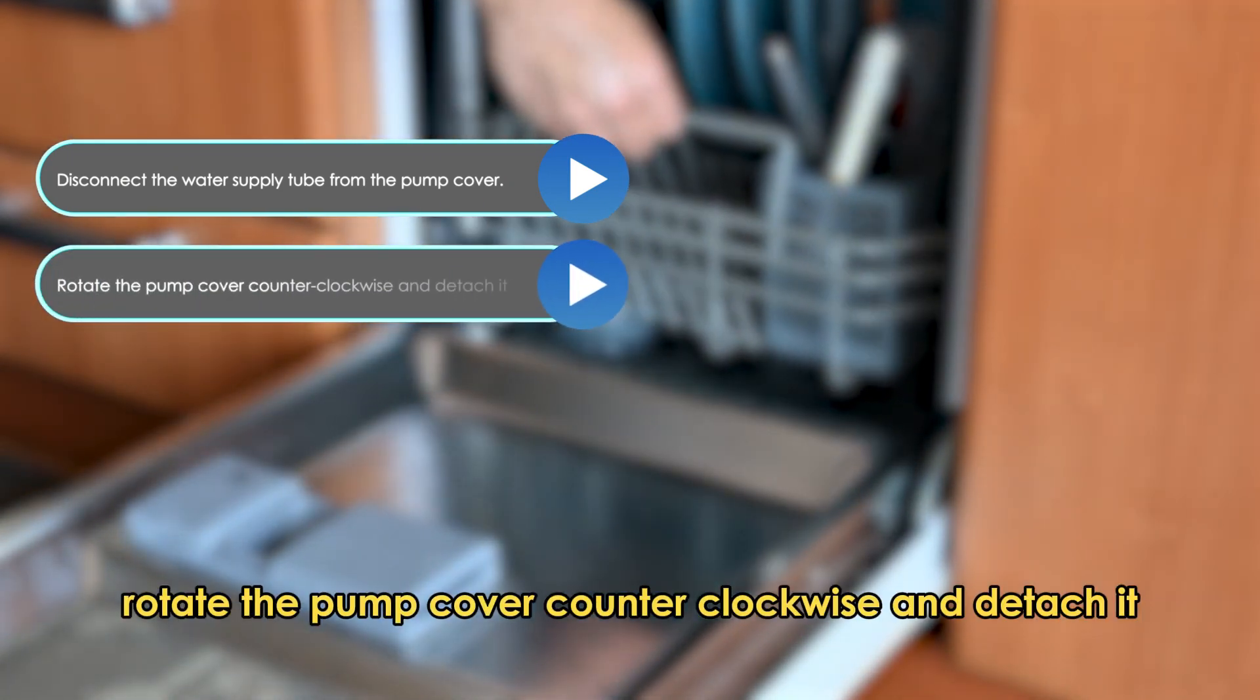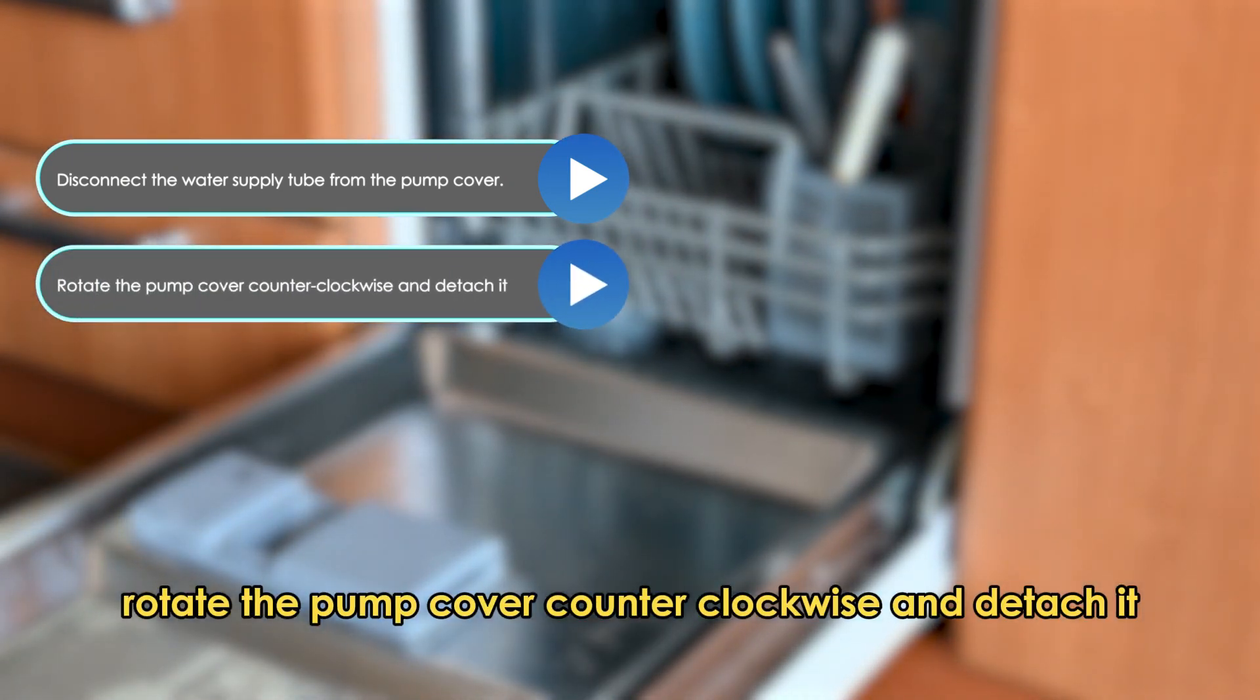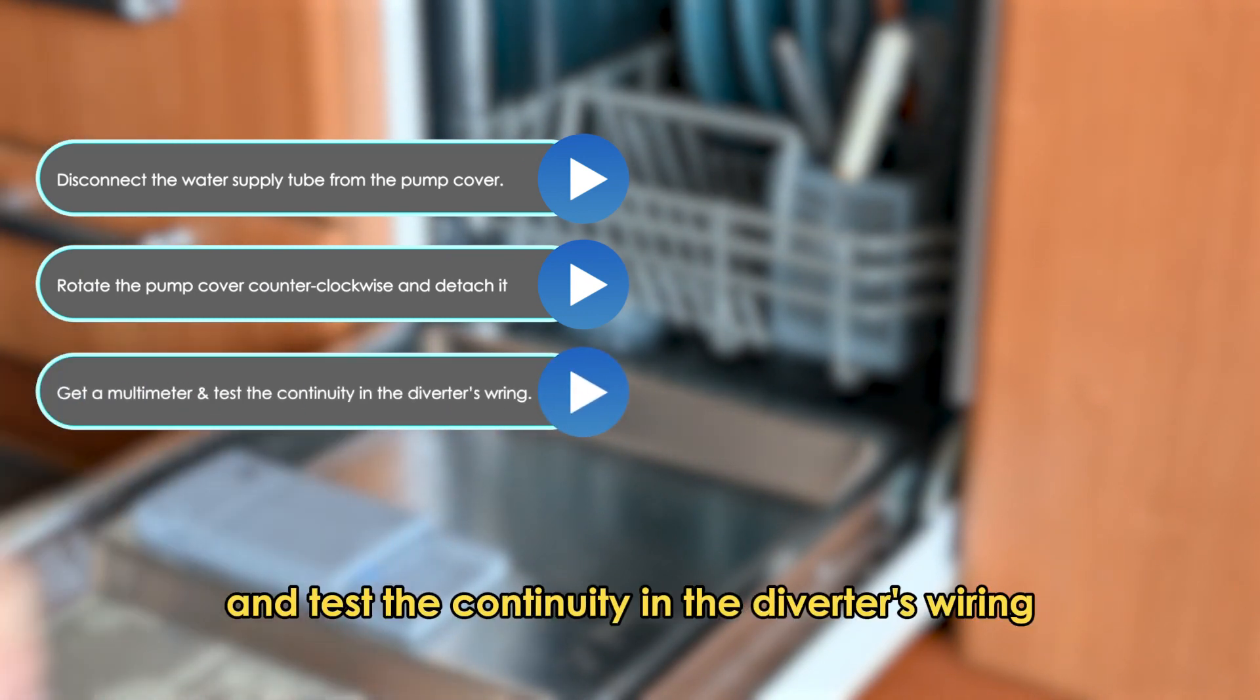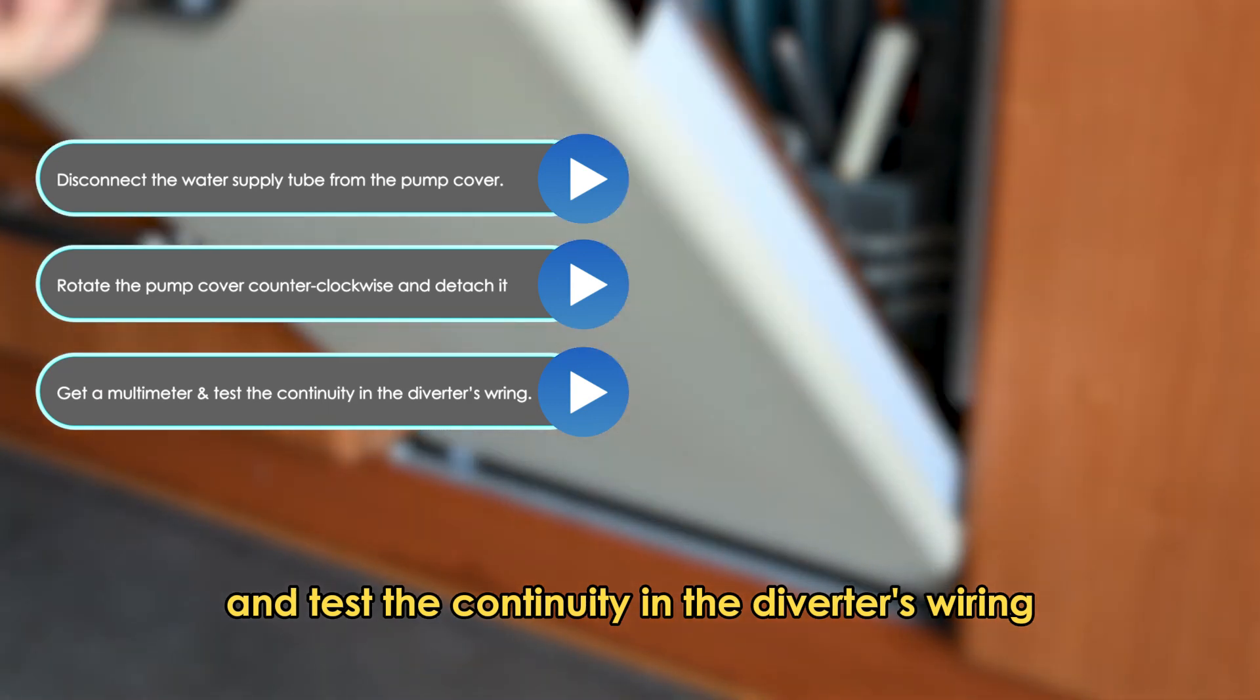Rotate the pump cover counter-clockwise and detach it to get a view of the diverter. Get a multimeter and test the continuity in the diverter's wiring.